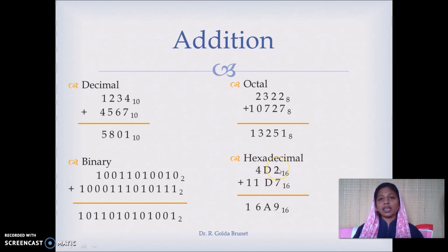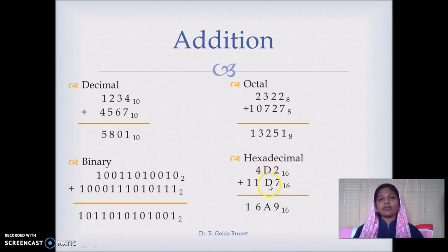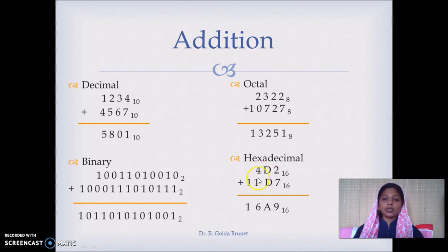For hexadecimal addition, 7 plus 2 is 9, which is valid in hexadecimal. D is 13 in decimal, so 13 plus 13 is 26 in decimal. Converting 26 to hexadecimal gives quotient 1 and remainder 10, and 10 in decimal is represented as A in hexadecimal. We write A and carry forward 1. Then 1 plus 4 plus 1 is 6, and the leading 1 comes here.